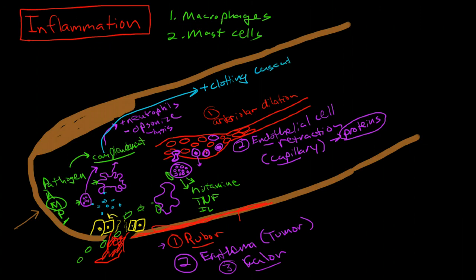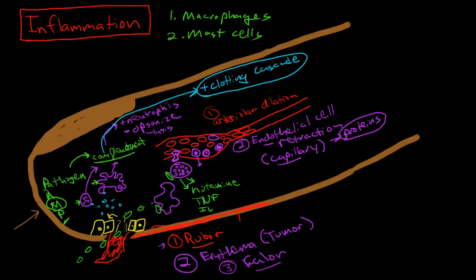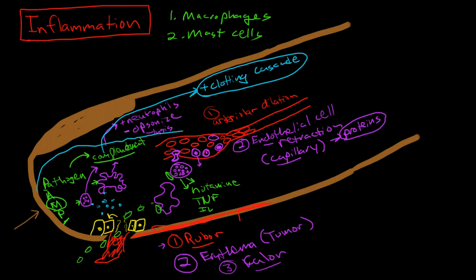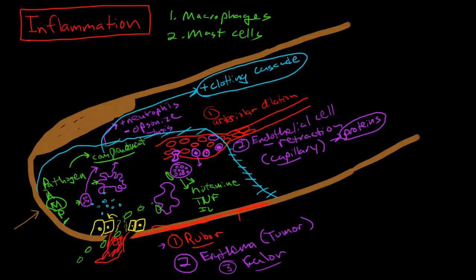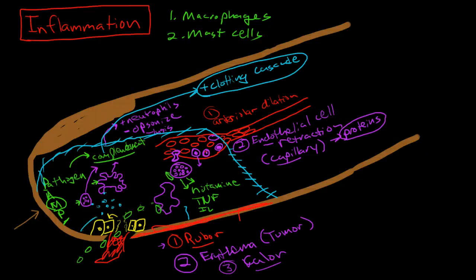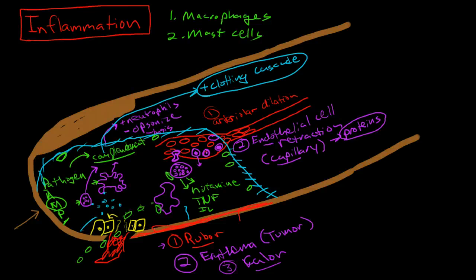Complement activates tissue factor and initiates the clotting cascade, which begins the process of walling off the area of inflammation. Eventually we're going to have fibrin infiltrate all of the tissues and wall off this whole area. This is a very protective mechanism because if there is significant infection here and the body is losing the battle, it prevents bacteria from spreading out of the tissue because the fibrin makes a thick wall.